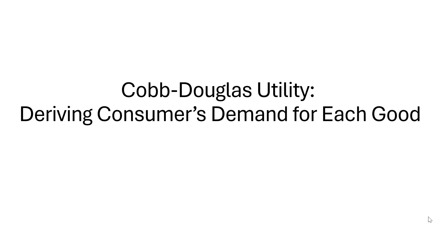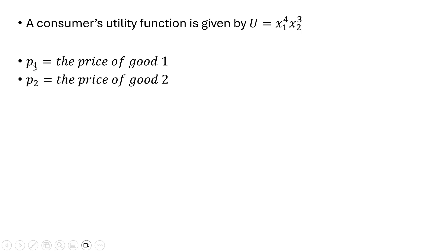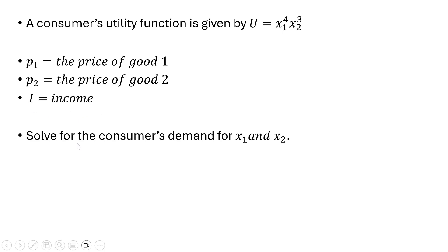Hello. In this video, we're going to derive the consumer's demand from the Cobb-Douglas utility function. Here's our consumer's utility function with Good 1 and Good 2, represented by the subscripts. The price of Good 1 is P subscript 1, and the price of Good 2 is P subscript 2. The consumer's income is represented by I. Given all of that, let's solve for the consumer's demand for Good 1 and Good 2.